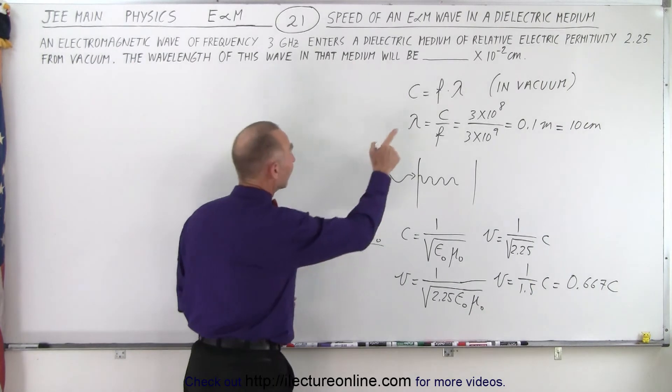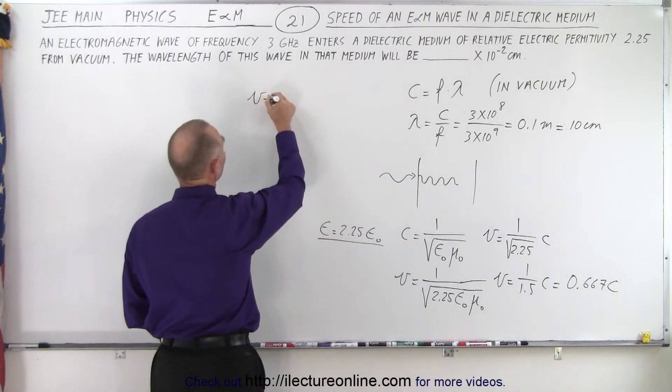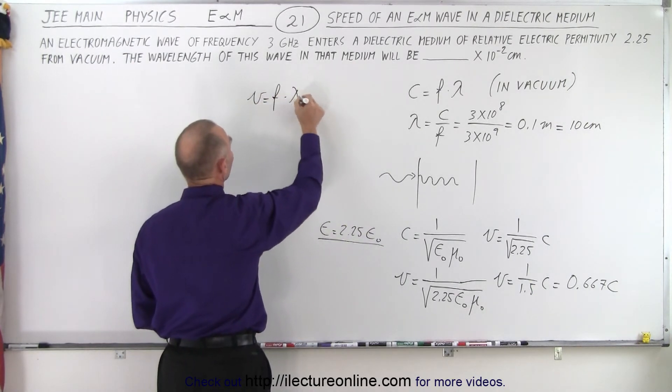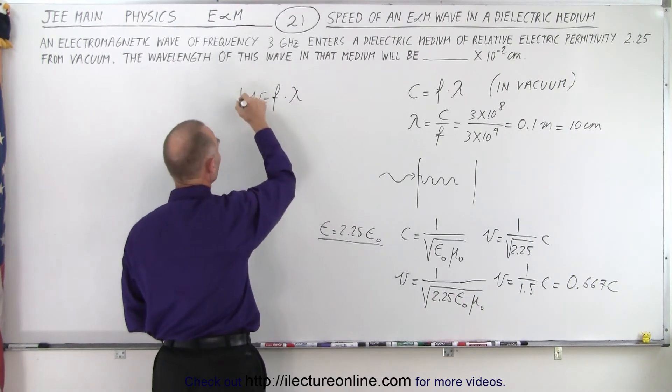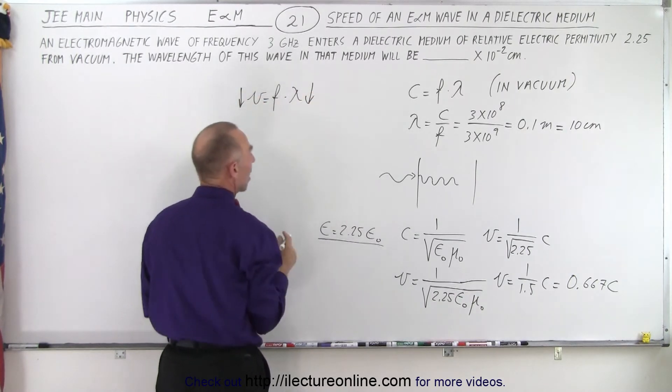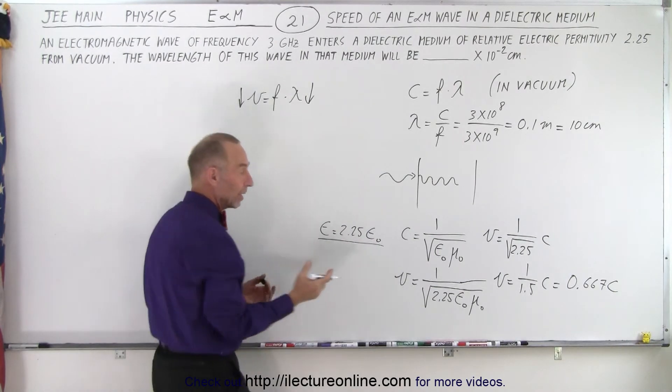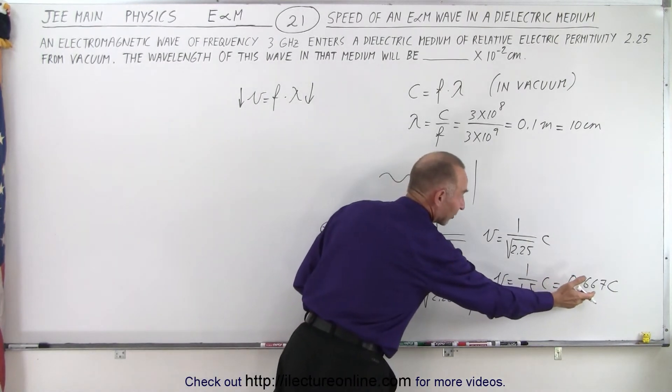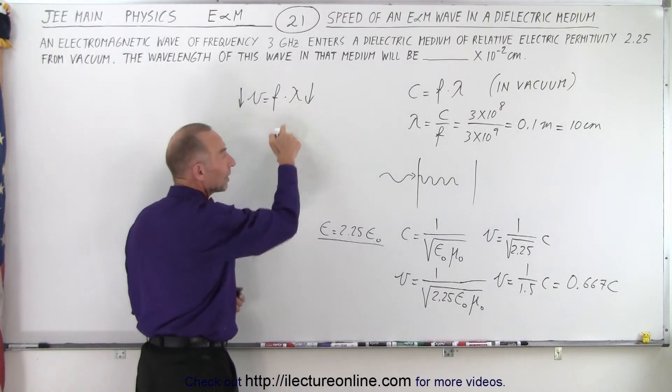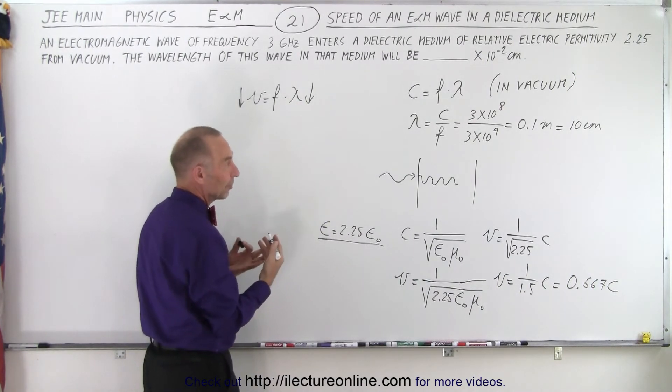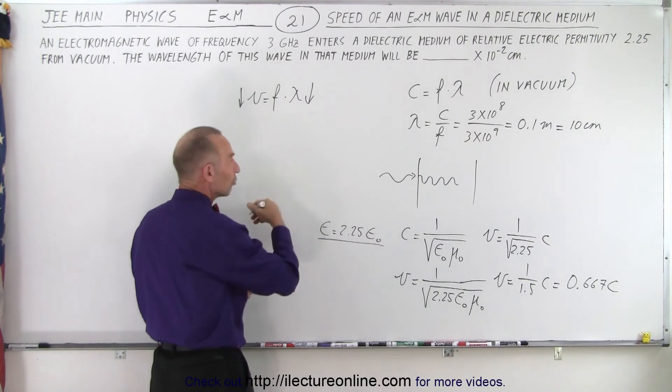And that means that since V is equal to the frequency times the wavelength and the frequency stays the same, that means if the velocity drops the wavelength needs to drop by the same amount. So if we go down to 66.7 percent of the speed of light that means the wavelength will also be 66.7 percent of the original wavelength.